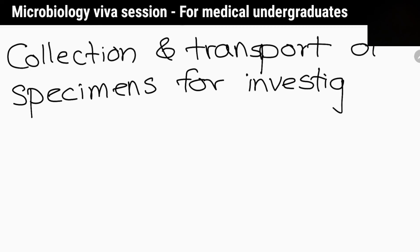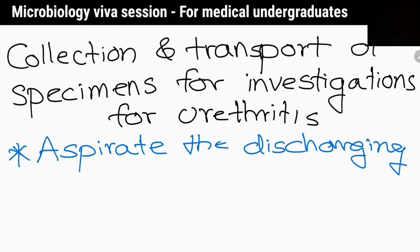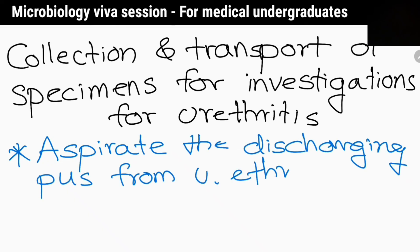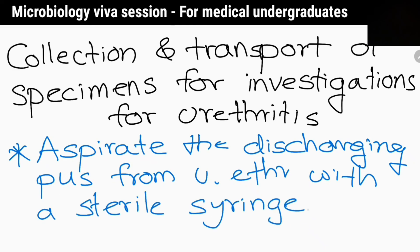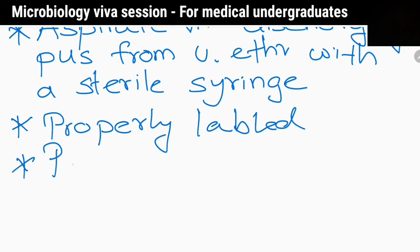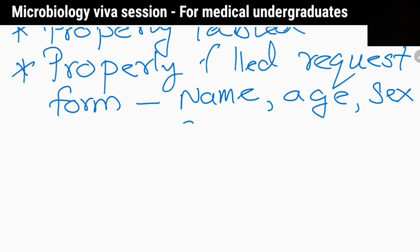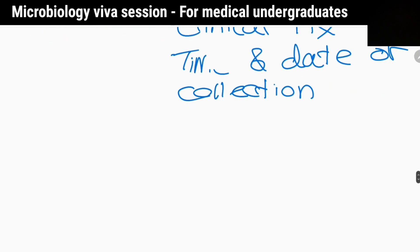How do you collect and transport specimens for investigation of urethritis? Aspirate the purulent discharge from the urethra with a sterile syringe before using antiseptics. It should be properly labeled and sent with a properly filled request form including patient name, age, sex, clinical history, and time and date of collection. It should be inoculated immediately for culture; if not, a transport medium can be used.